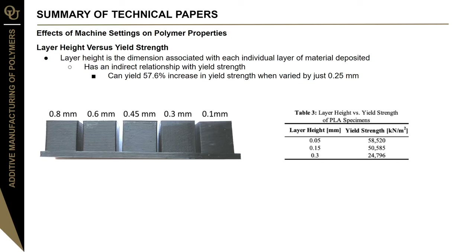The second parameter under analysis is layer height, which is the dimension associated with each individual layer of material deposited. It has an indirect relationship with yield strength. In this experiment, a 57.6% increase in yield strength was seen when layer height was varied by as little as 0.25 millimeters. The biggest aesthetic difference is the ability to see each individual layer line, but in terms of material properties, the yield strength is heavily affected.